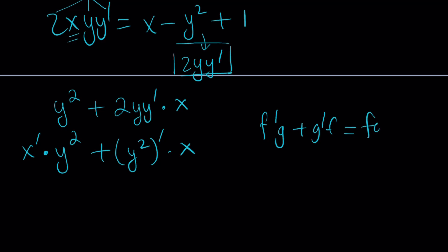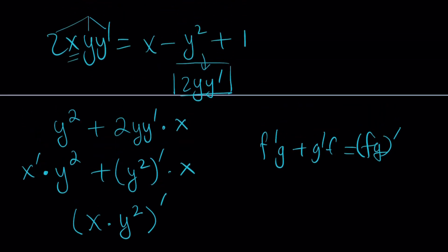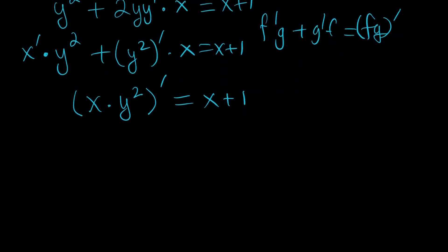If you said the product rule, yes, you got it. So this is the derivative of a product. We can write this expression as the derivative of x times y². What we have left, once we added that y², is x + 1. So on the right-hand side, we have x + 1.